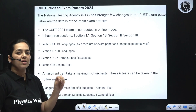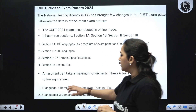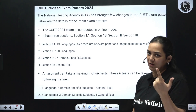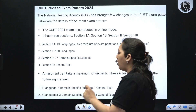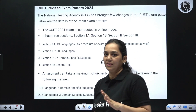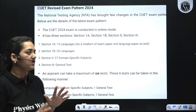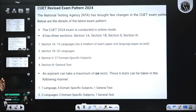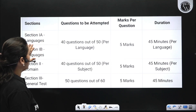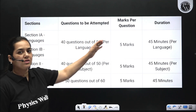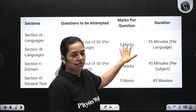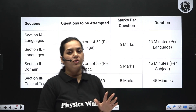You can take a maximum of 6 tests. You can select 1 language for domain specific subject and 1 general test. For Section 1A and 1B languages, you have 40 questions out of 50 that you would be expected to answer. Each question has 5 marks and the duration of the paper would be 45 minutes.